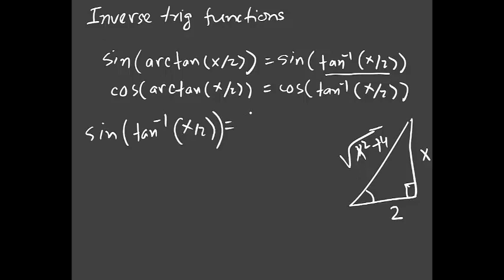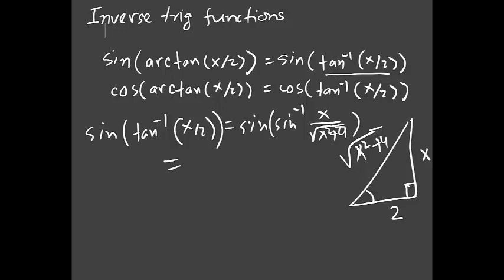Now we can write sine of tan inverse(x/2) — convert it to sine inverse. Sine is opposite over hypotenuse, so that gives us x over √(x² + 4). Sine and sine inverse cancel, giving x over √(x² + 4).